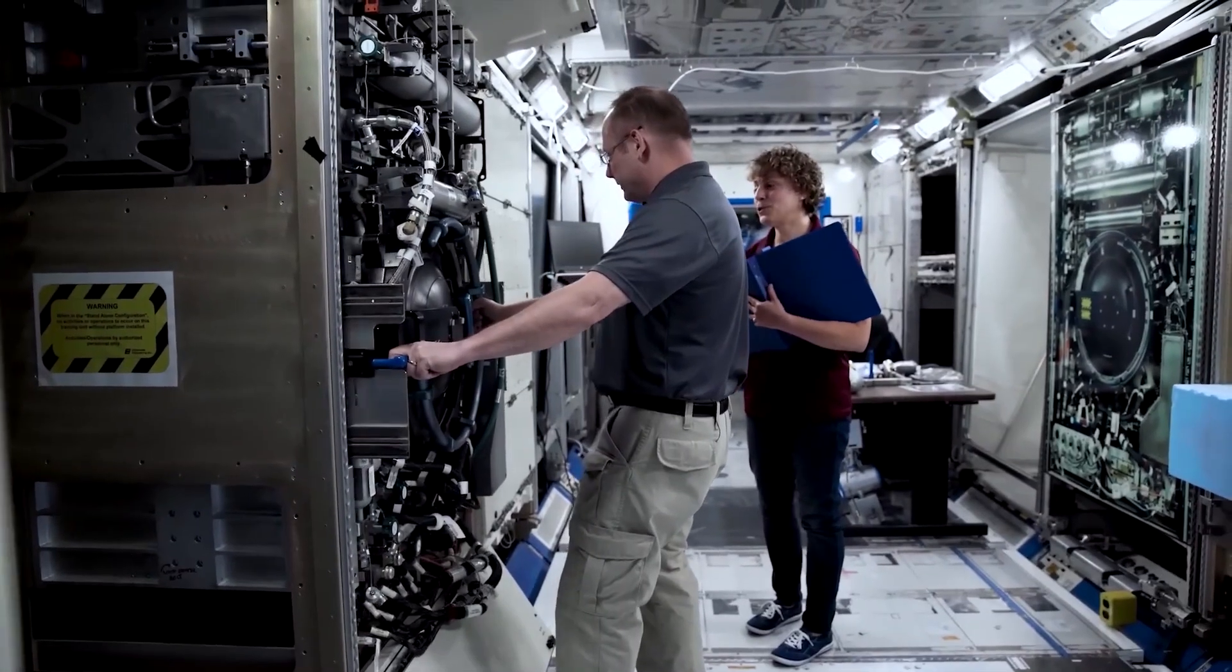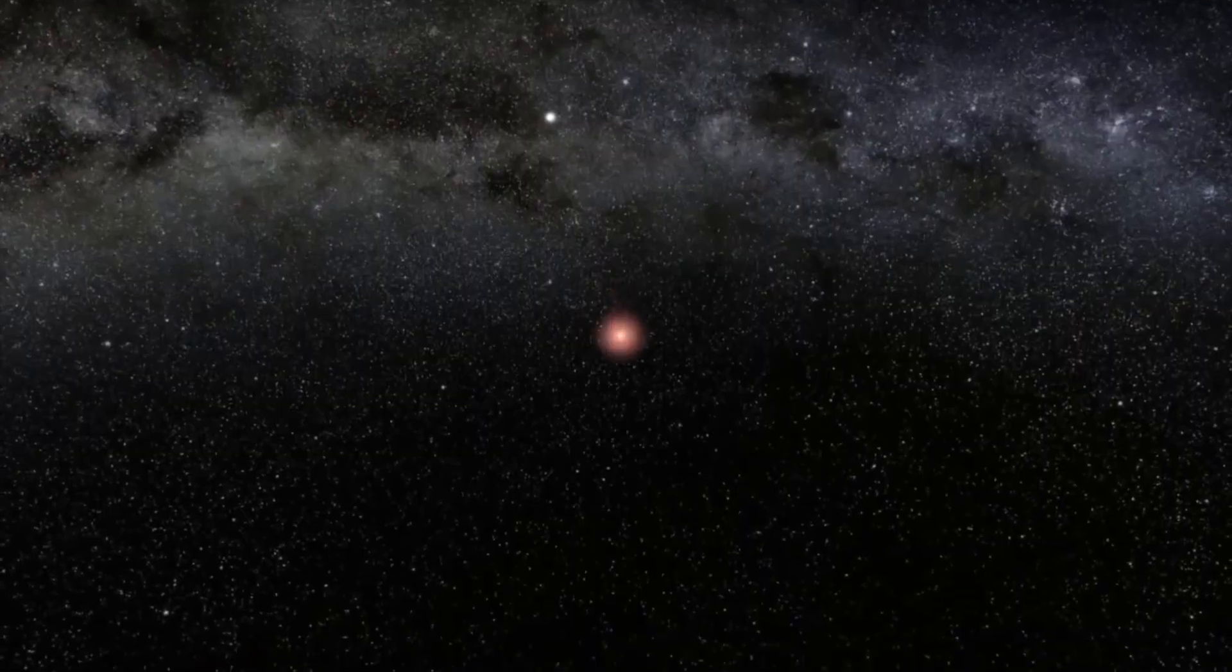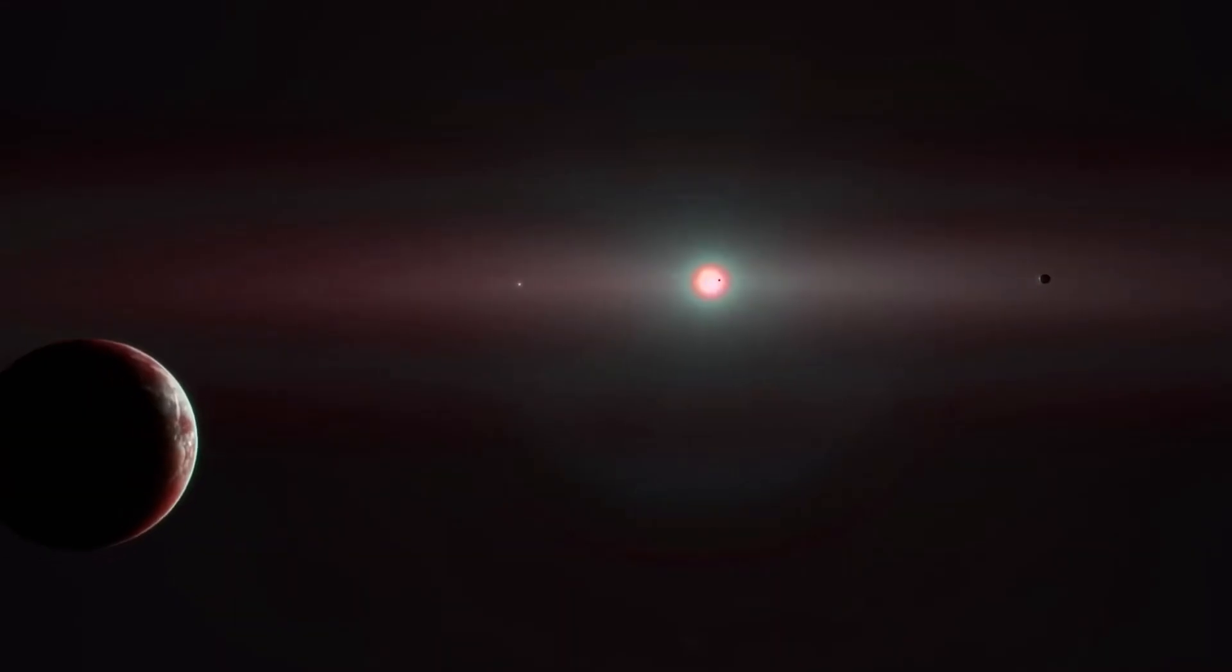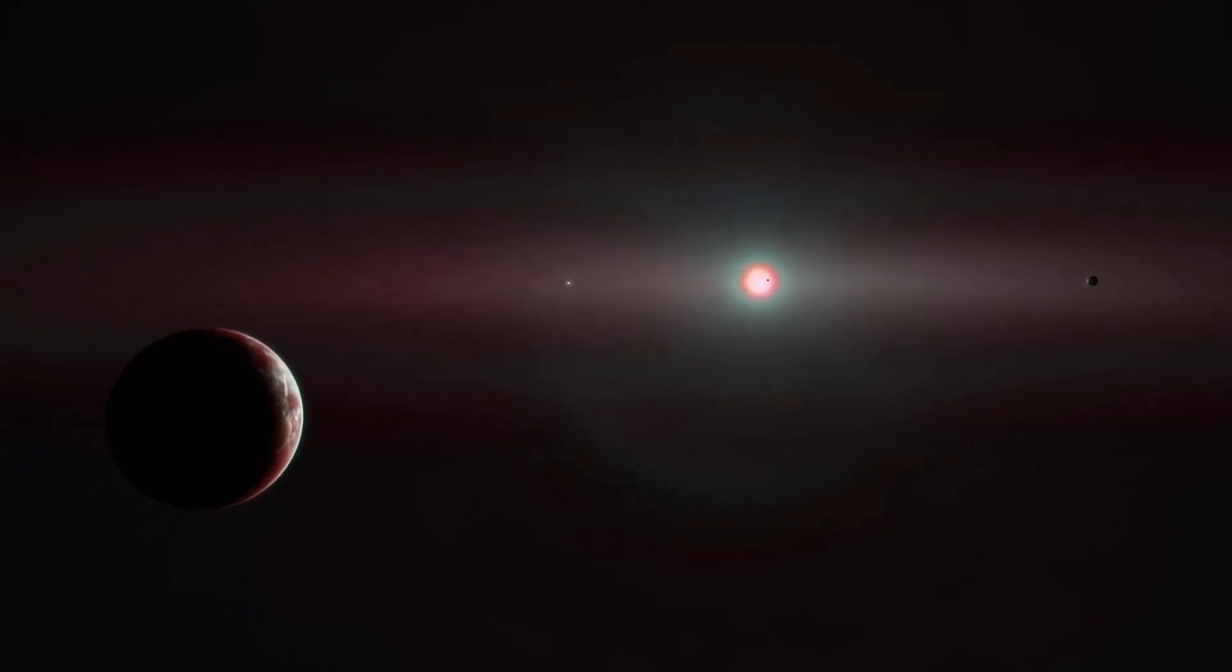Scientists want to find out if the lights coming from Proxima b are of artificial origin. What will the James Webb discover when it approaches this alien world, and how will it change our lives?